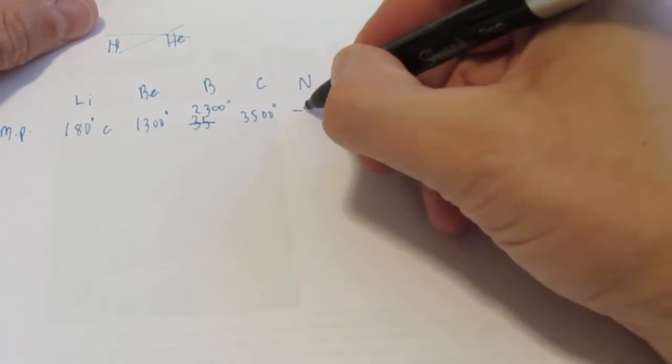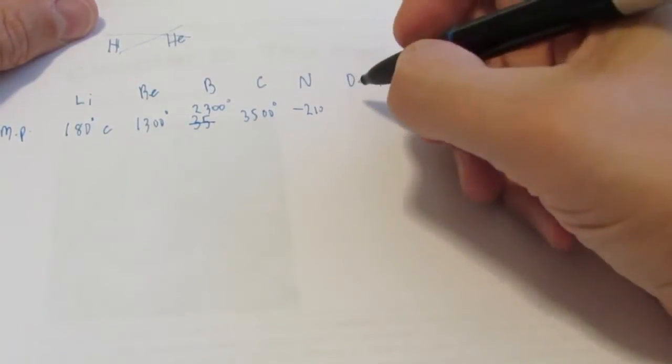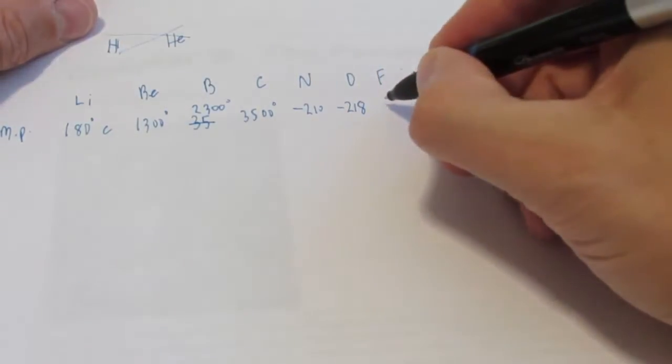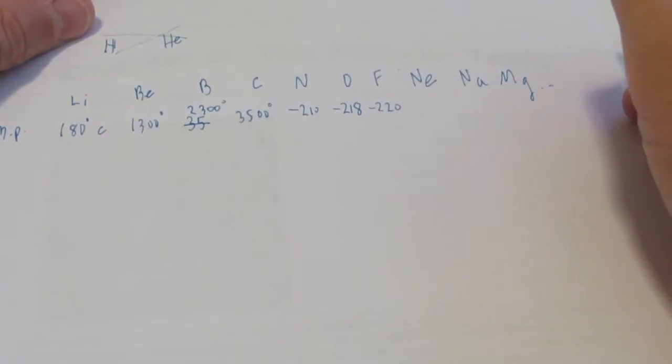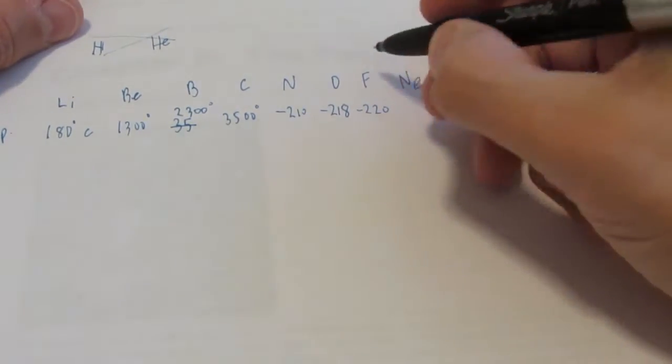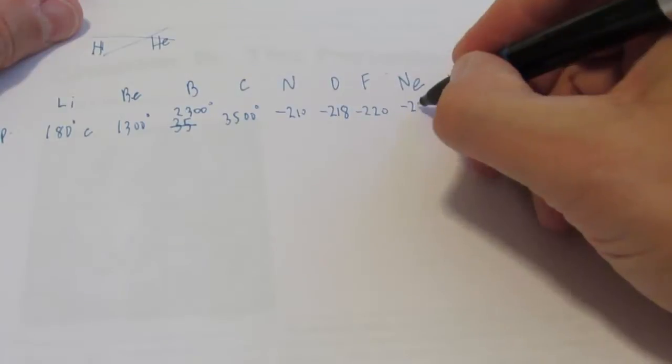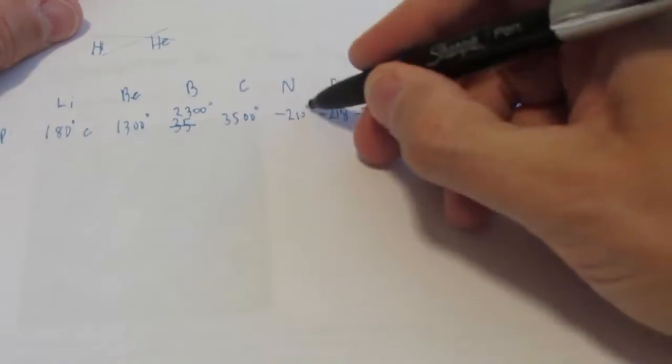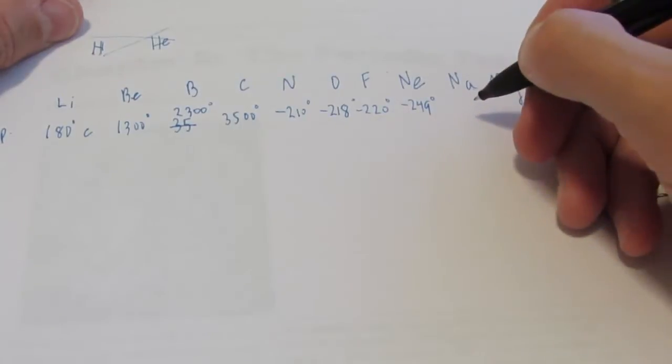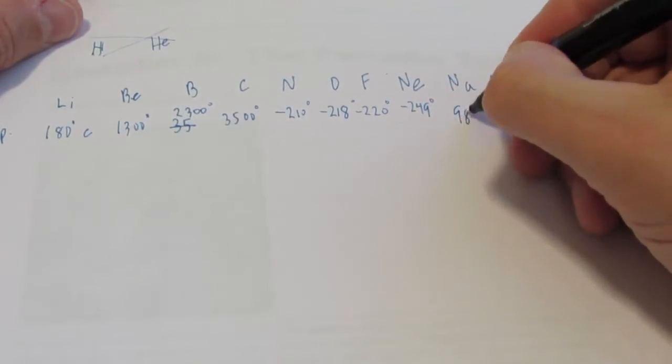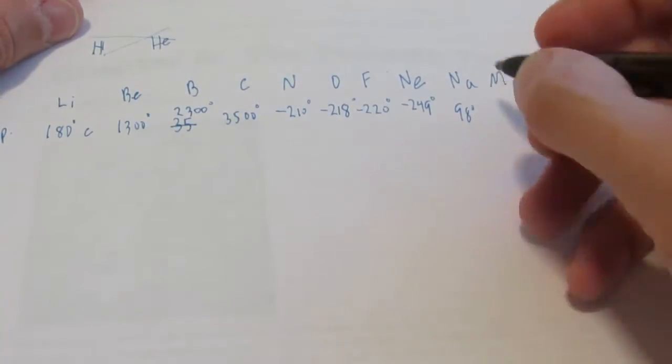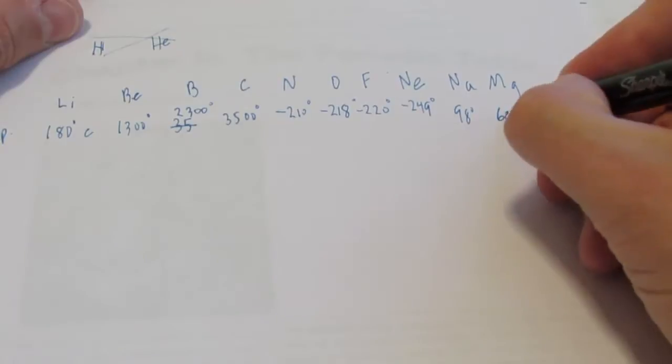And then nitrogen is negative 210. Oxygen, a bit cooler, negative 218. Fluorine, a bit cooler still, negative 220. And neon is the coolest so far at negative 249 degrees Celsius. Now after neon, the next heaviest element is sodium, and it has a melting point of 98 degrees Celsius. Then we hit magnesium at 639.